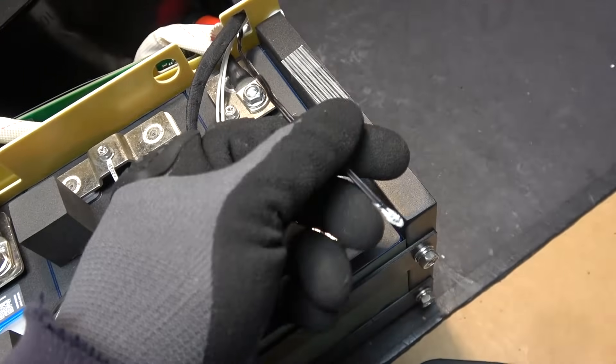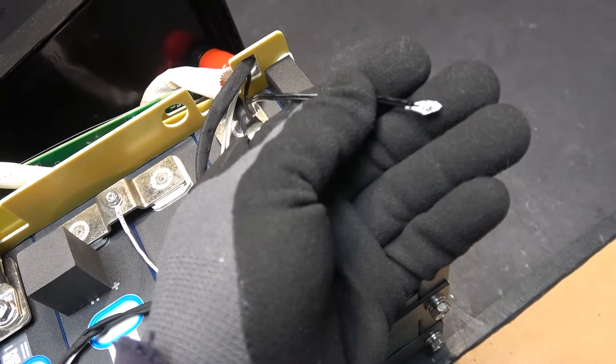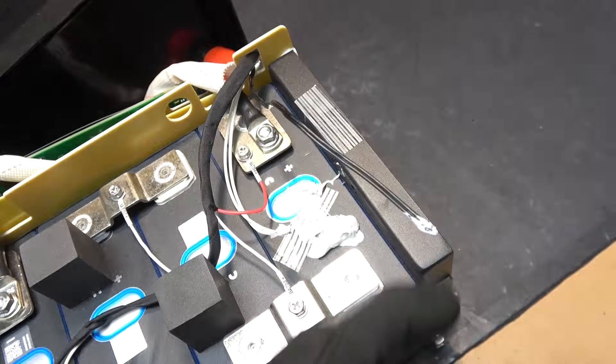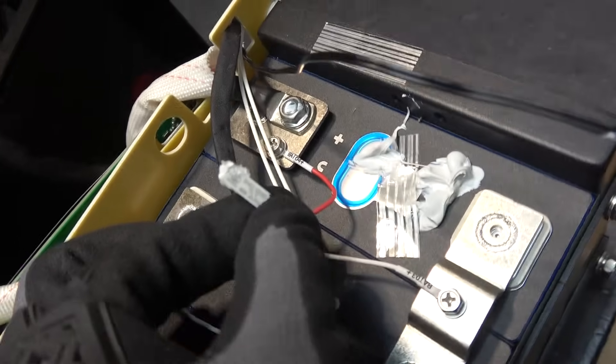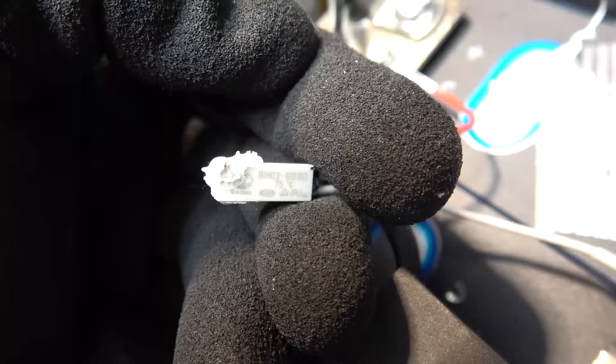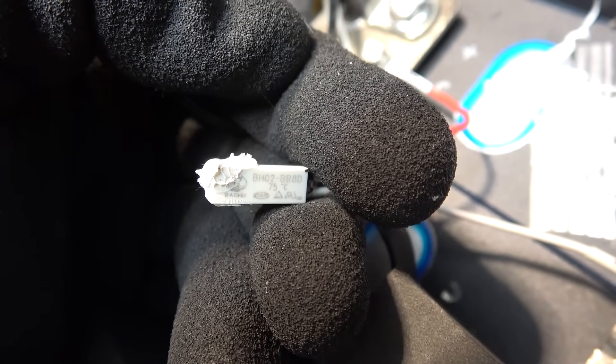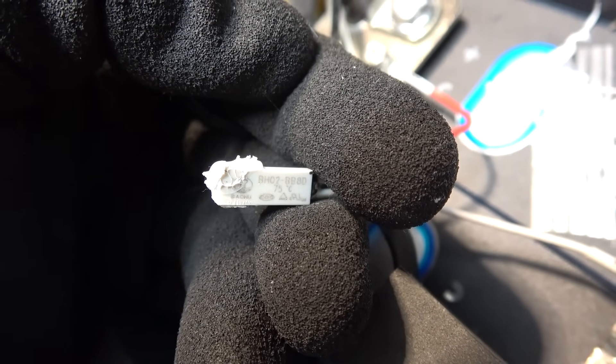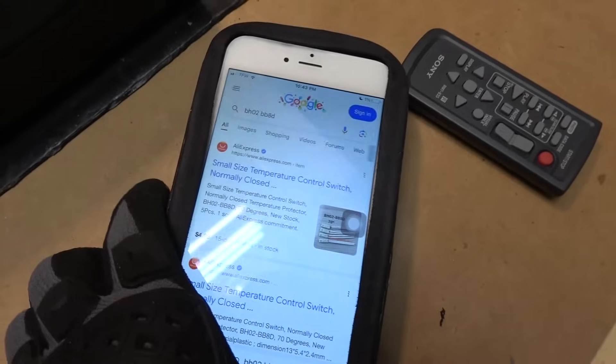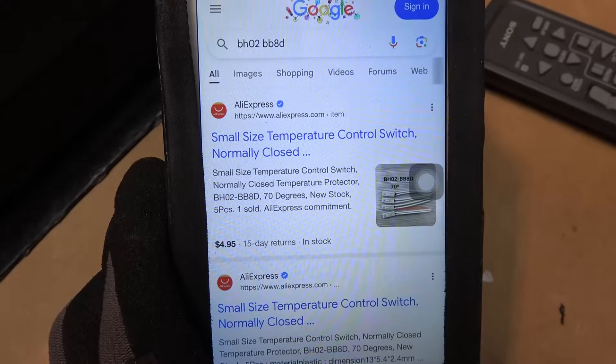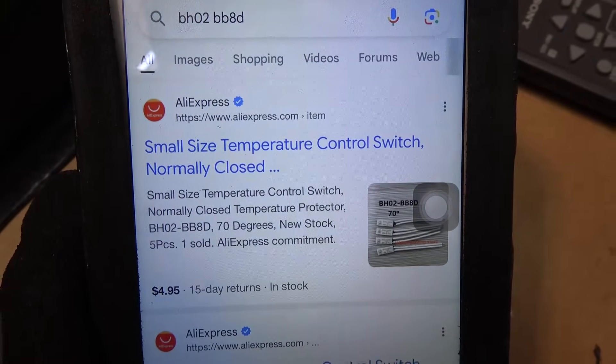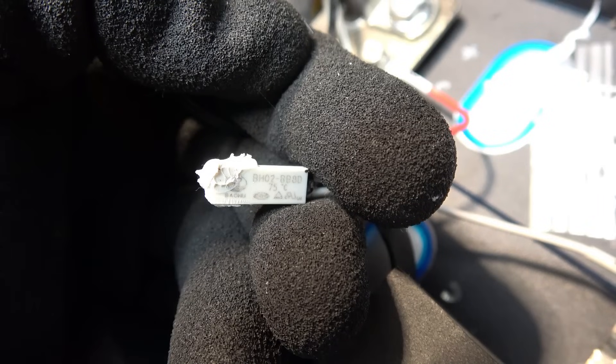The first sensor is a regular thermistor. This is something you typically see in other batteries. The second one looks different and there is a part number on it. It says BH02 BB8D 75 degrees Celsius. Let's go ahead and do a Google search. And this is what I come up with. Small size temperature control switch, normally closed. And this one shuts down at 75 degrees Celsius.